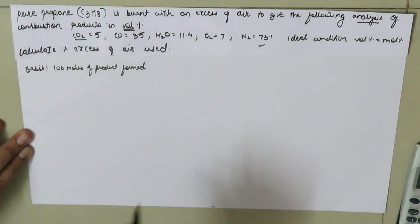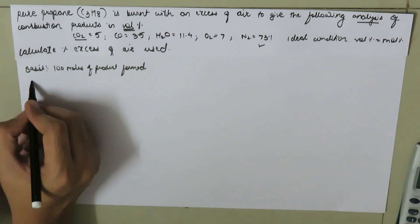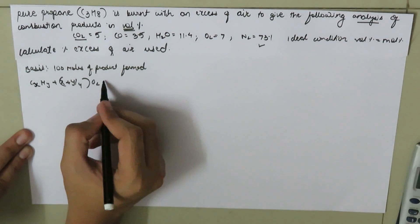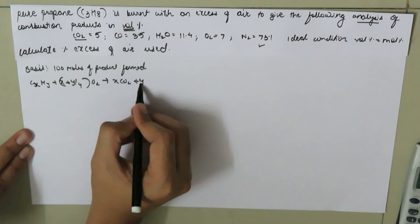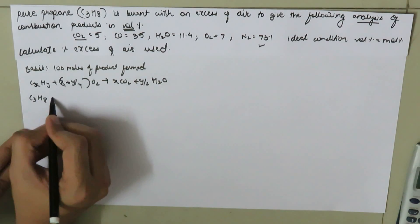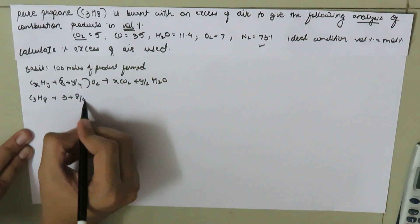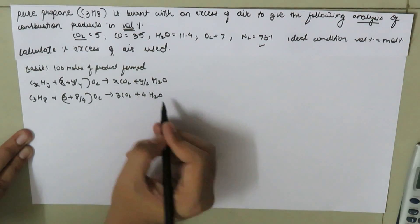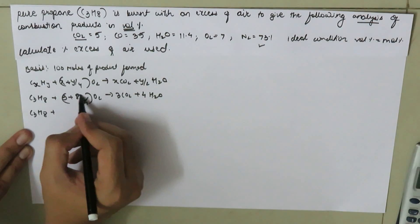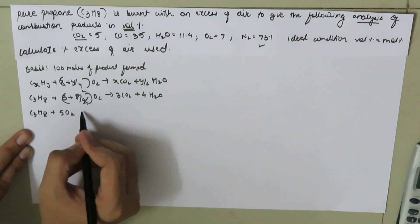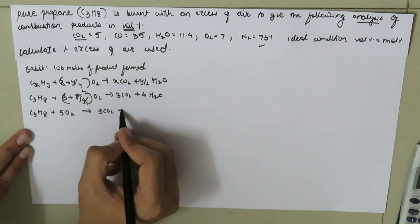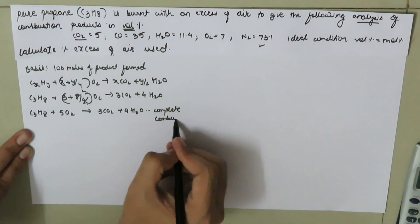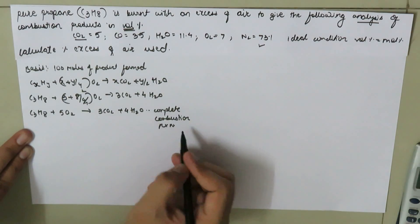The combustion reaction for propane can be written as CxHy + (x + y/4) O2 → x CO2 + (y/2) H2O. For C3H8, the complete combustion reaction is: C3H8 + 5 O2 → 3 CO2 + 4 H2O.